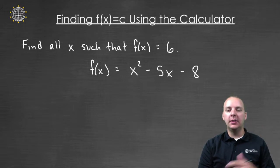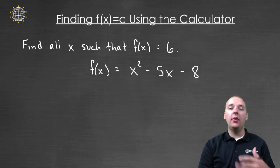A very popular exercise we see a lot in our algebra class is something like this. They say find all the values of x such that f(x) equals some constant, like we have equals six. And then they'll provide you with a quadratic function like x² - 5x - 8 like we have here.